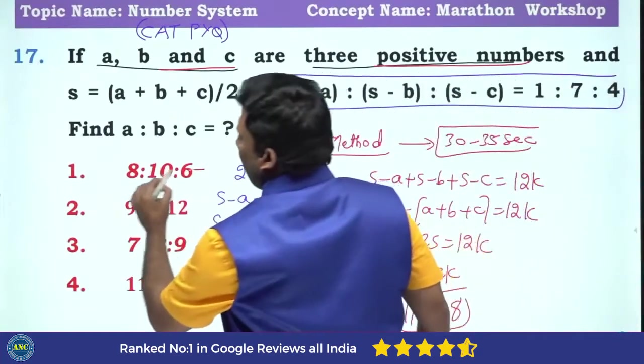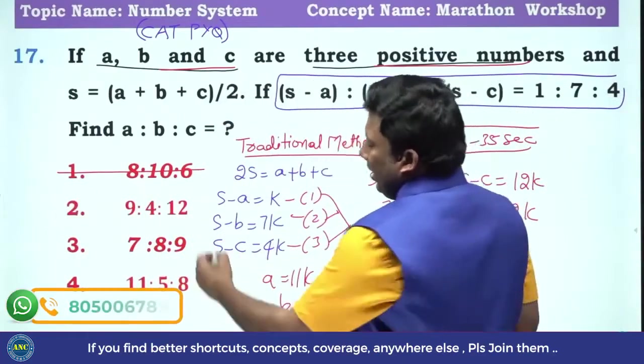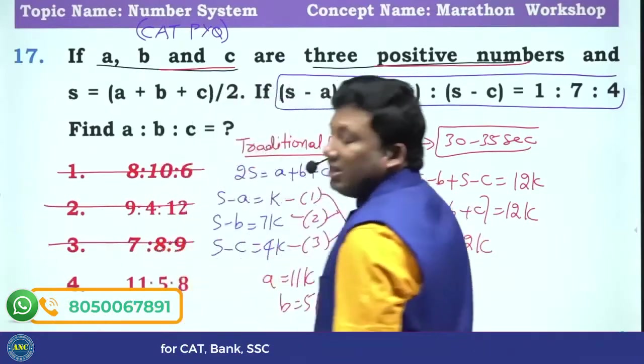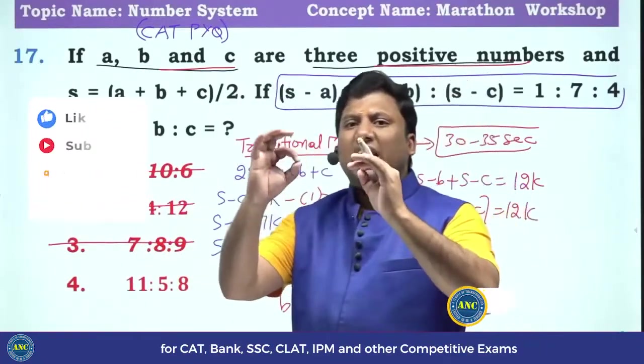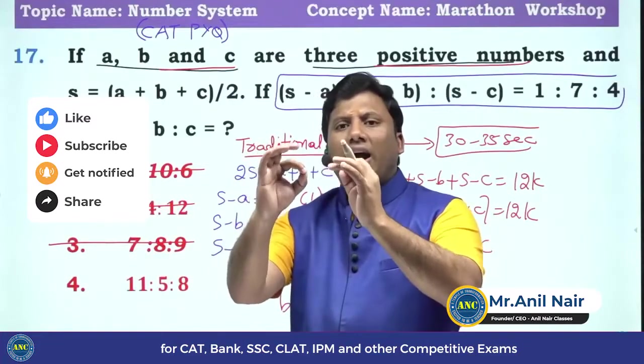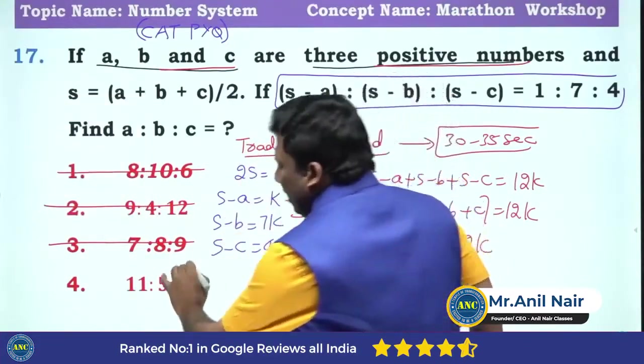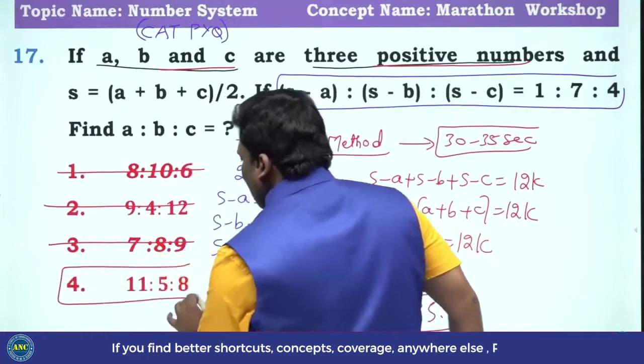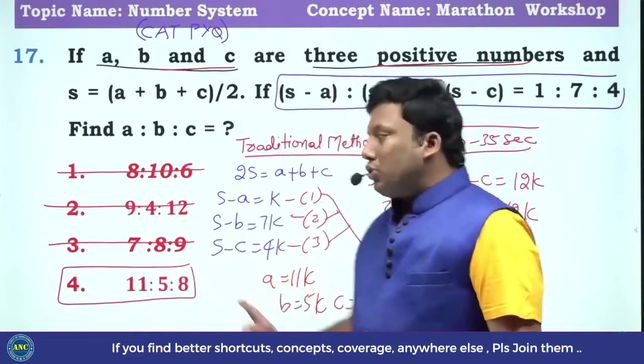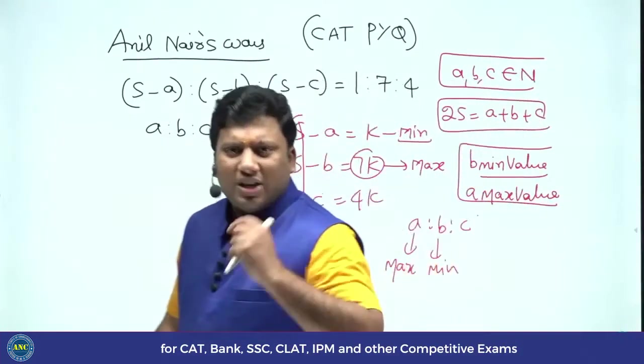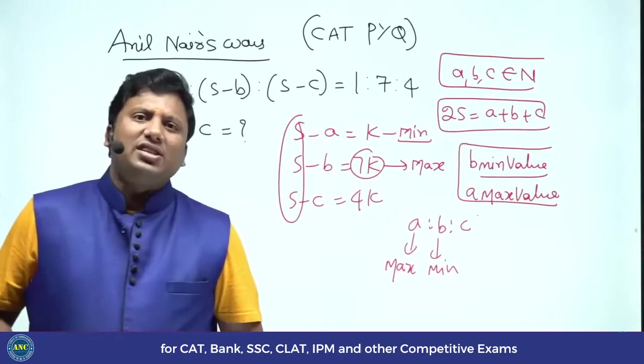Here B is taking maximum. Here C is taking maximum. Exact answer options. You can go and download the previous year CAT paper and see it. A is maximum. How much time it takes to identify which is maximum, which is minimum? Do you think they are checking out your mathematical skills?